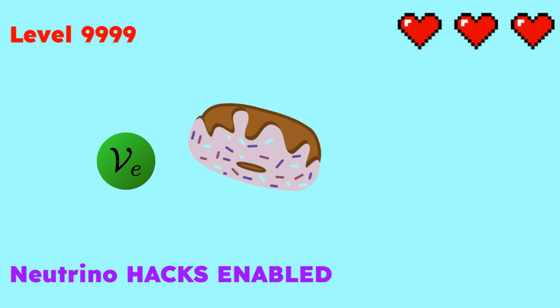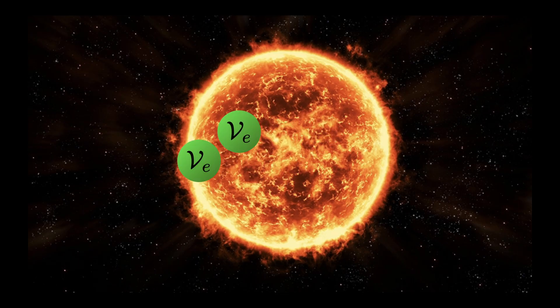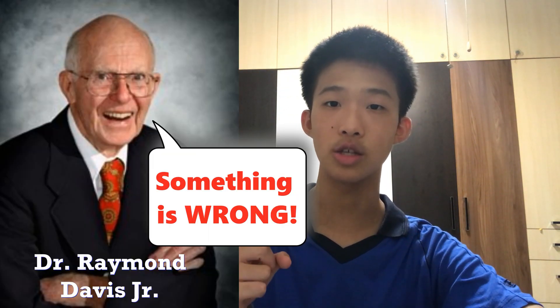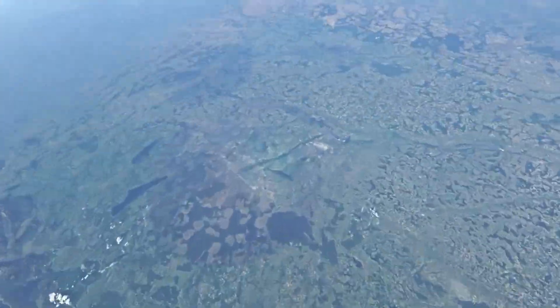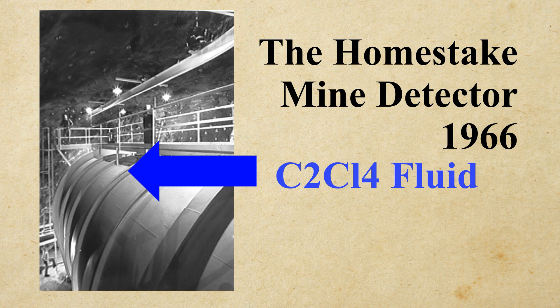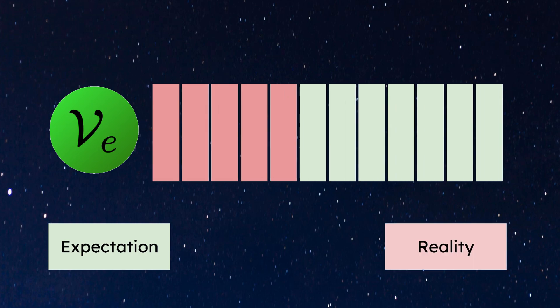Because neutrinos can literally pass through anything, they escape the sun and travel through space. However, in 1968, physicist Raymond Davis Jr. found something strange when trying to detect neutrinos on Earth. He built a huge tank filled with a special fluid that reacts with high-energy electron neutrinos. However, the amount detected was only one-third of what was expected.